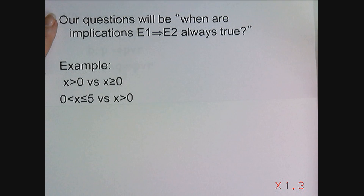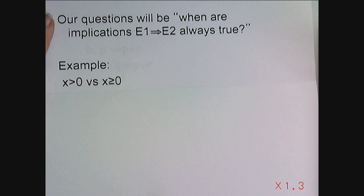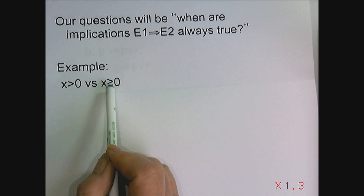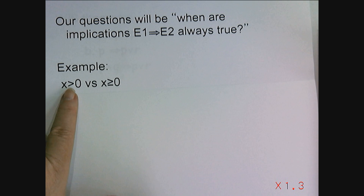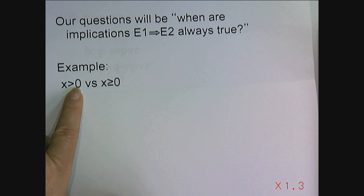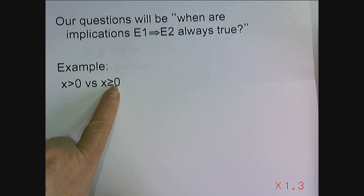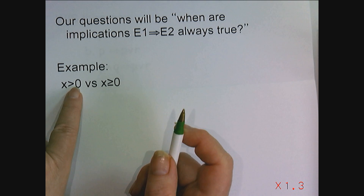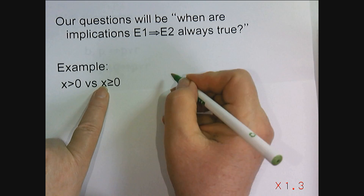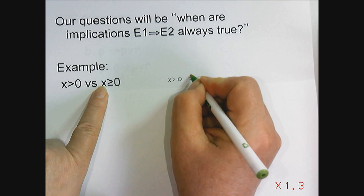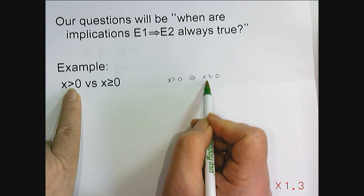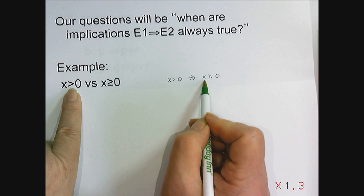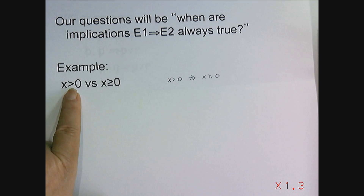For example, if we're comparing the two predicates x greater than zero and x greater than or equal to zero, is one of these stronger or weaker than the other? Anytime we know that a variable takes on values that are greater than zero, those values are going to be greater than or equal to zero. So x being greater than zero implies x is greater than or equal to zero. Therefore, x greater than zero is stronger than x greater than or equal to zero, or we could say x greater than or equal to zero is weaker than x greater than zero.